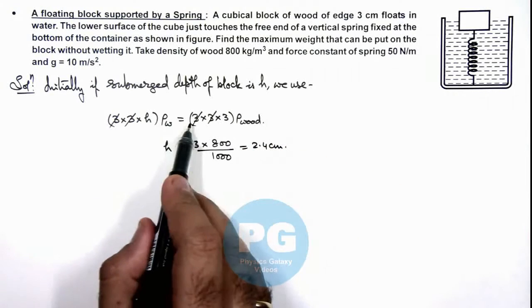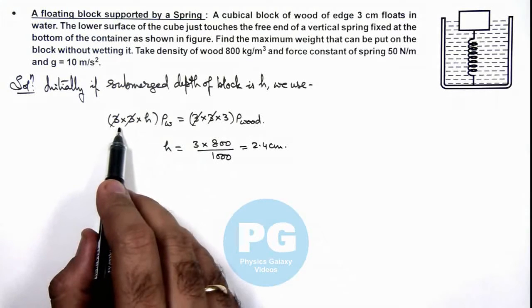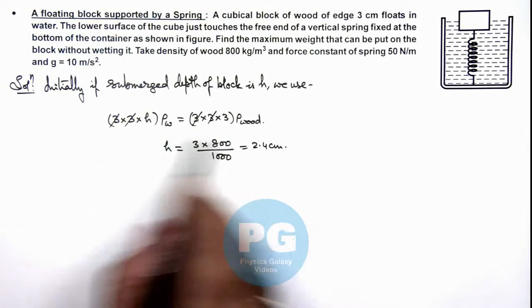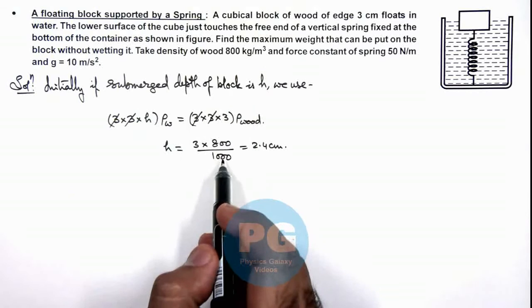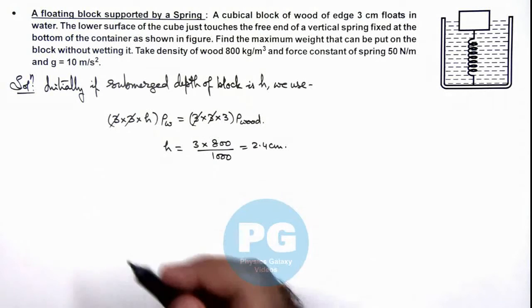Here you can see I have taken these distances in centimeter and wood and water density to be in kg per meter cube, so h we are getting in centimeter.